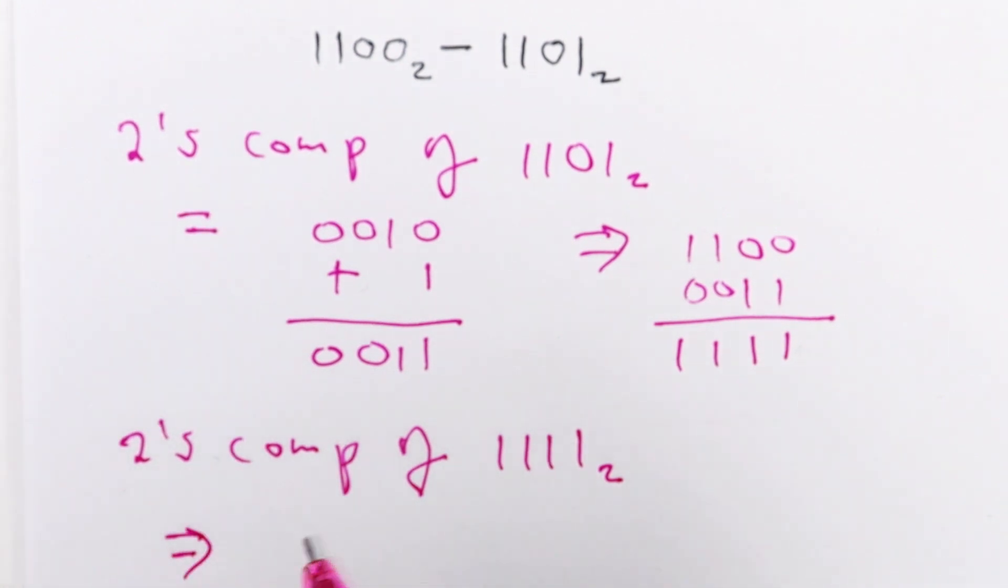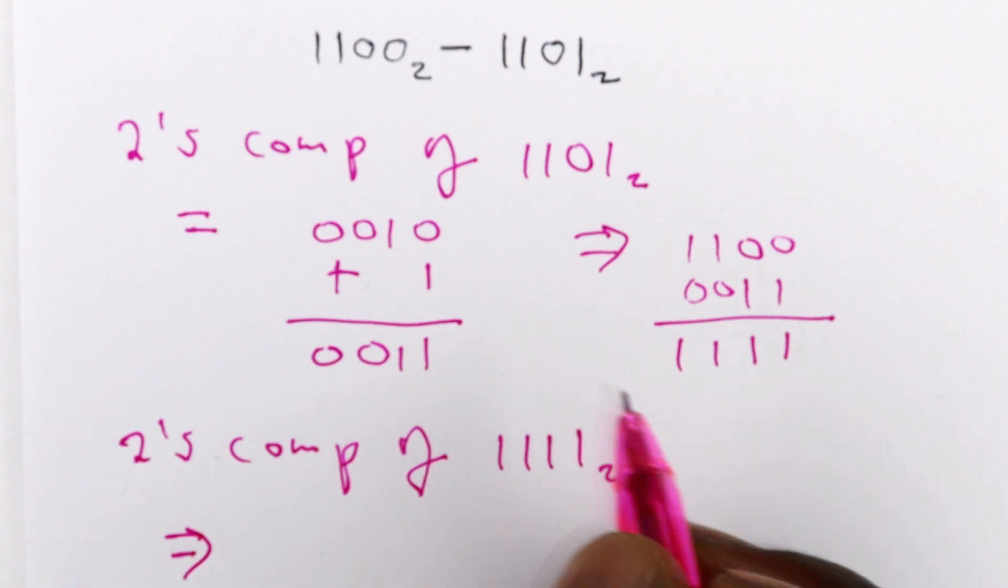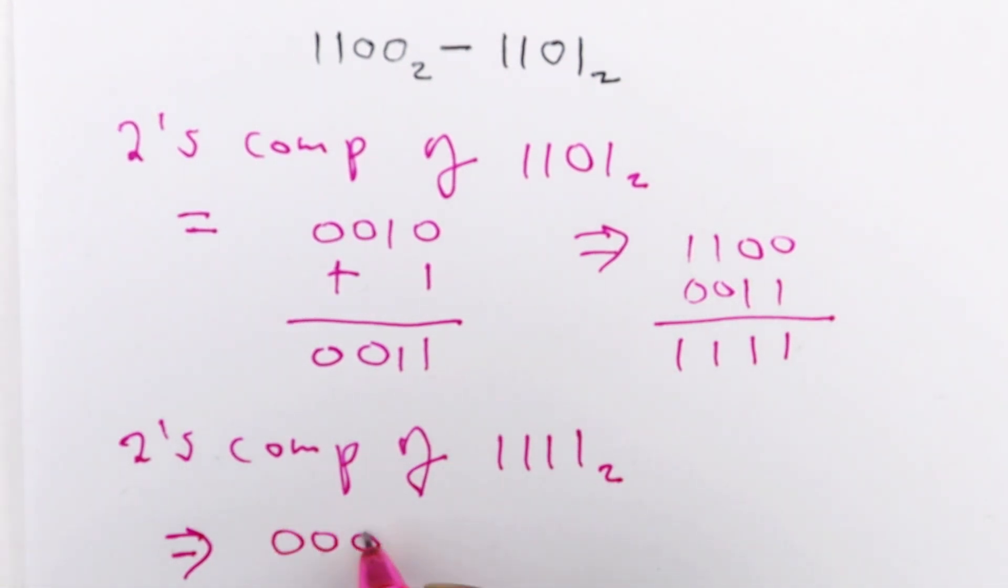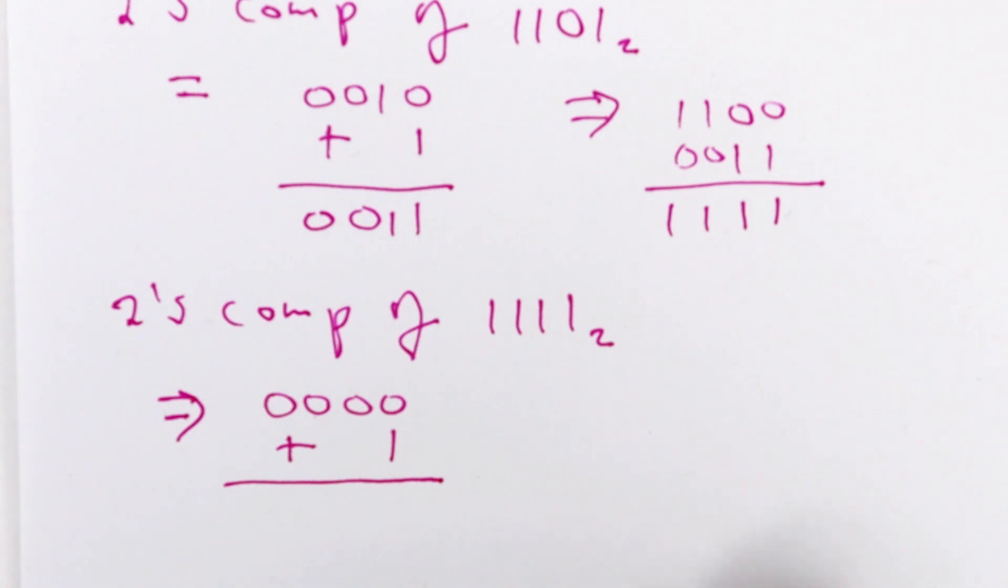To get the 2's complement, you just get the 1's complement of that number and then add 1 to it. So the 1's complement of this number is 0000. Then you add 1 to it. When you add 1 to it you are going to get 0001.